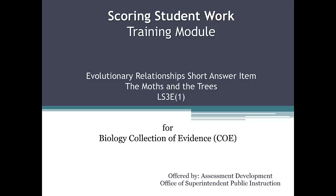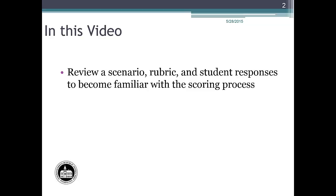The focus of this video is to provide guidance for scoring student short answer responses using rubrics. We will review one scenario, an associated item, and several student responses to that item. We will take a close look at the relationship between a scoring rubric and student responses for a short answer question. I will demonstrate the scoring process with six student responses for the Evolutionary Relationships question. You will then review other student responses in the same way.